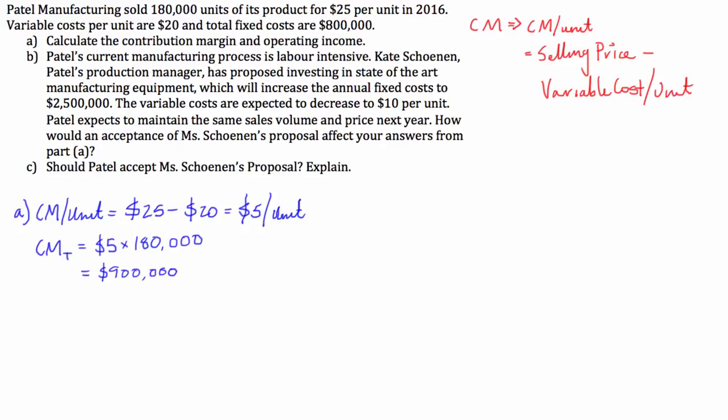And we're asked to also find the operating income. So let's go over what the operating income is. Operating income is also referred to as EBIT. This is earnings before interest and taxes. So basically what we're going to do here is operating income is our contribution margin total, subtract our fixed costs. Because the contribution margin total already includes our total variable costs. So the variable costs sit in here. So we just have to subtract the fixed costs from it.